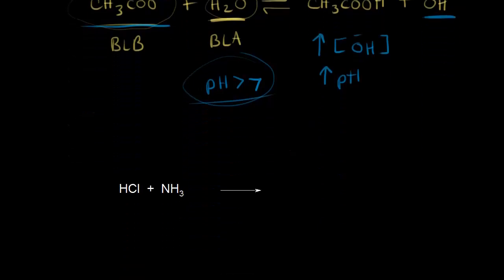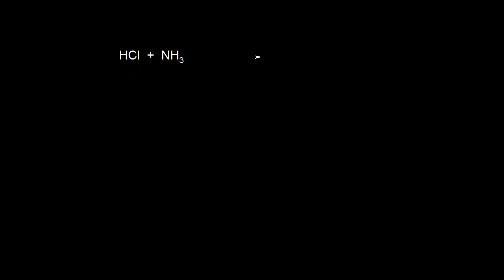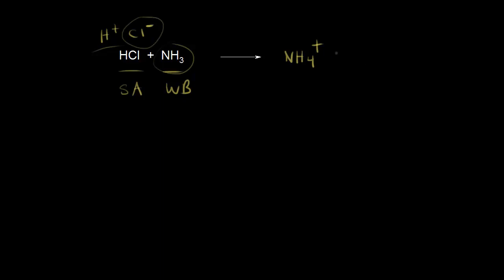Let's look at one more example — a strong acid and a weak base. HCl is our strong acid and ammonia is our weak base. HCl provides H+ and Cl−; we donate a proton to NH3. If NH3 accepts a proton, it turns into NH4+, ammonium. The chloride anions ionically interact with ammonium to form ammonium chloride — this is our salt.